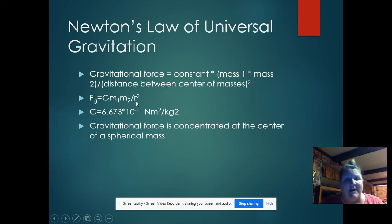divided by the radius squared. The value for big G, the constant, universal gravitational constant, is 6.673 times 10 to the negative 11, newtons, meters squared per kilogram squared.